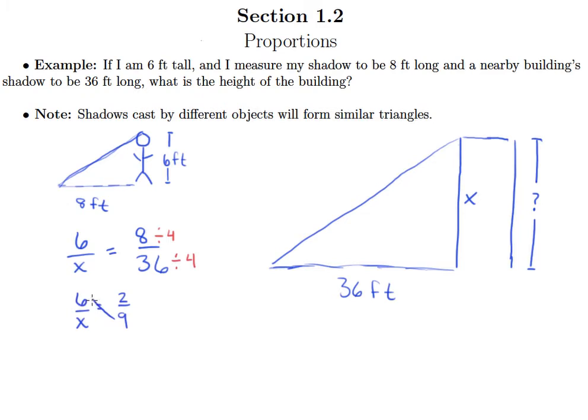Take my cross product. Six times nine is 54 equals two times X. And then I can divide by two on both sides. My X is now all by itself. And 54 divided by two is 27.